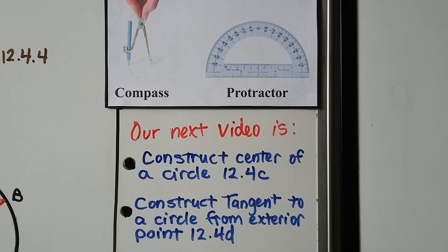For our next couple of videos, we're going to need our compass and protractor as a straight edge because we're going to construct the center of a circle in 12.4C, and then we're going to construct a tangent to a circle from an exterior point in 12.4D.